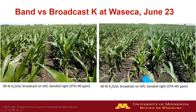In the photo on the right, we have another pair — a different plot — where a cover for a pail splits the two plots. This is the broadcast side on the left and banded on the right. The soil test level for these two plots was 85 parts per million, and again we applied 60 pounds of K2O. You can see much smaller, more uneven corn with more K deficiency on the broadcast side, compared to much taller corn with greater leaf area on the banded side.